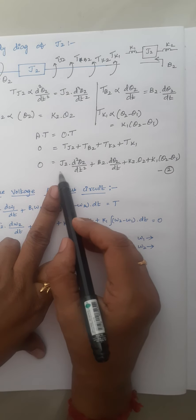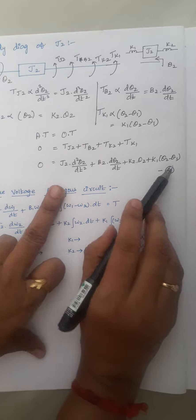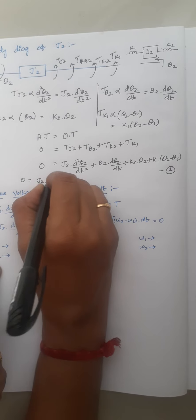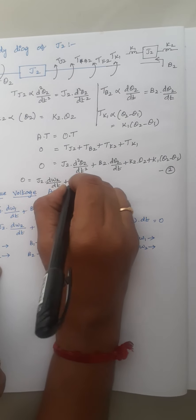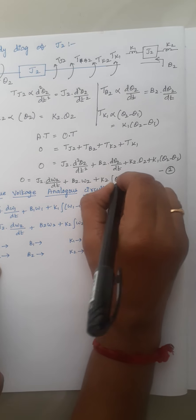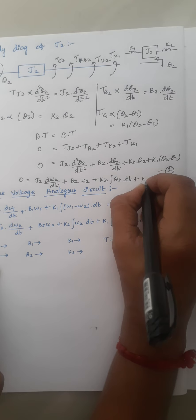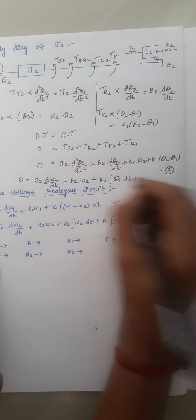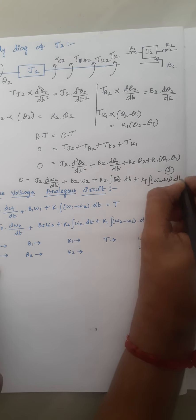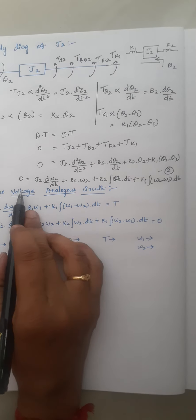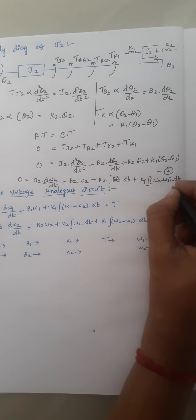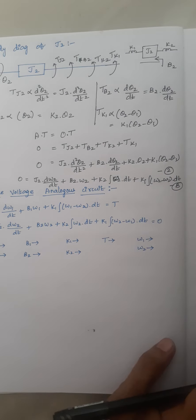Rewriting theta in terms of angular velocity, equation B becomes: 0 = J2 · dω2/dt + B2 · ω2 + K2 · ∫ω2 dt + K1 · ∫(ω2 − ω1) dt. This is the expression in terms of angular velocity — equation B.